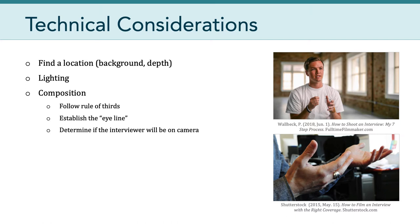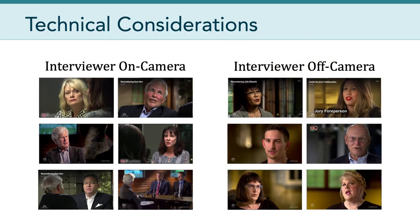Let's take a look at some examples from classic interview shows such as 60 Minutes or Dateline. All of the images on the left have the interviewer on camera — usually it's the back of the interviewer, over-the-shoulder footage, with some variation in how much of the interviewer's body is shown. All of the examples on the right have the interviewer off camera. Take a look at the eye line — what direction are the interviewees looking? In most of these examples, you could imagine the interviewer sitting off camera, nodding and listening as the interviewees speak.